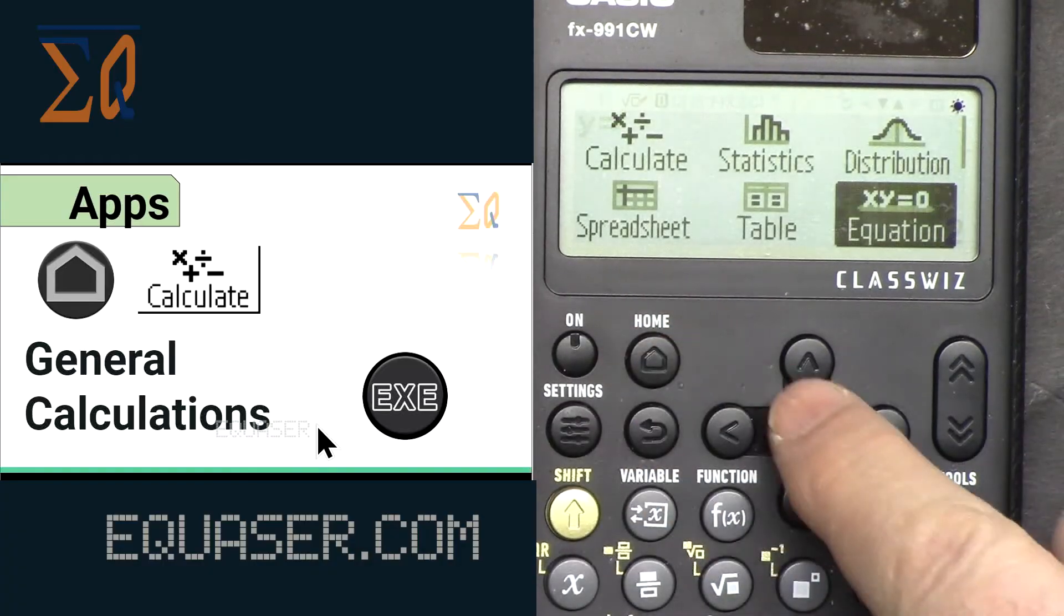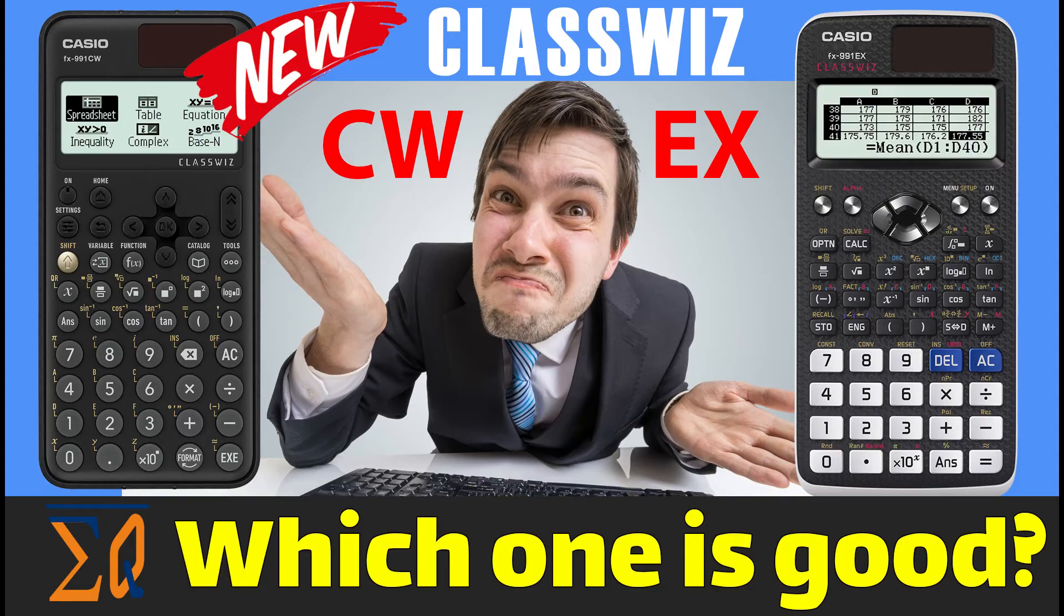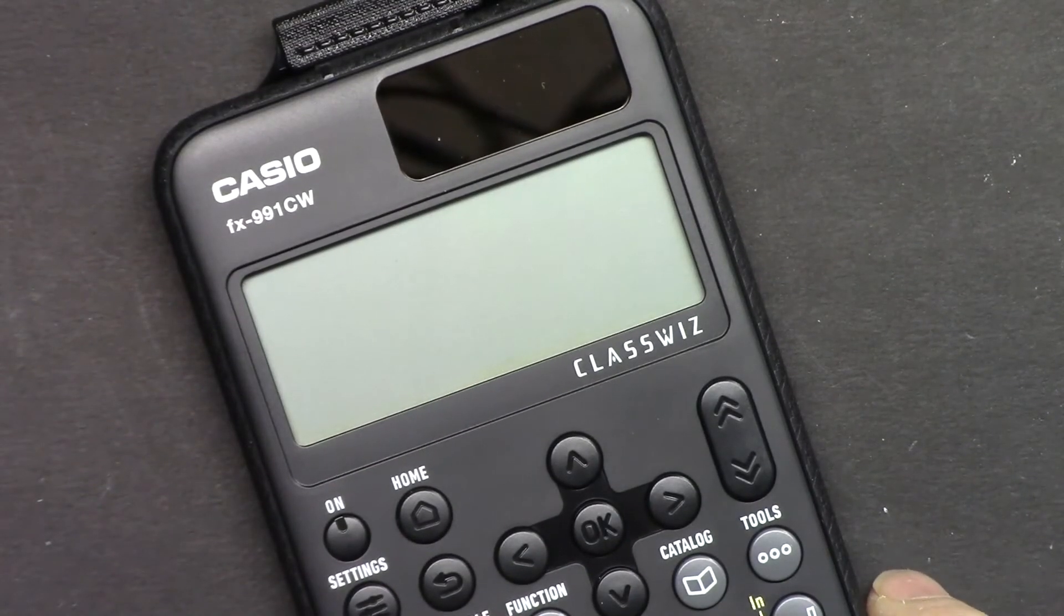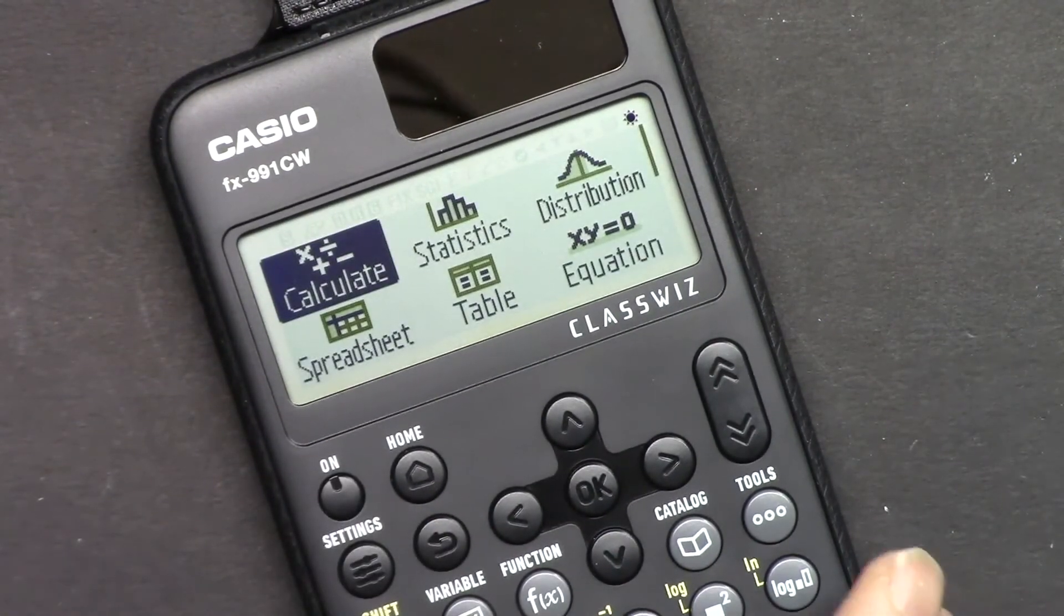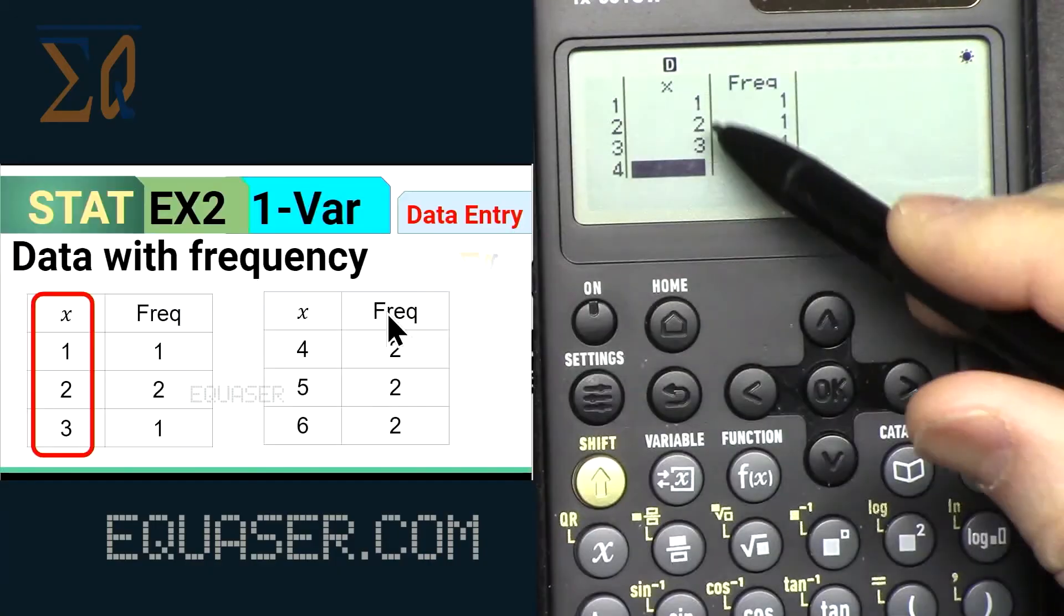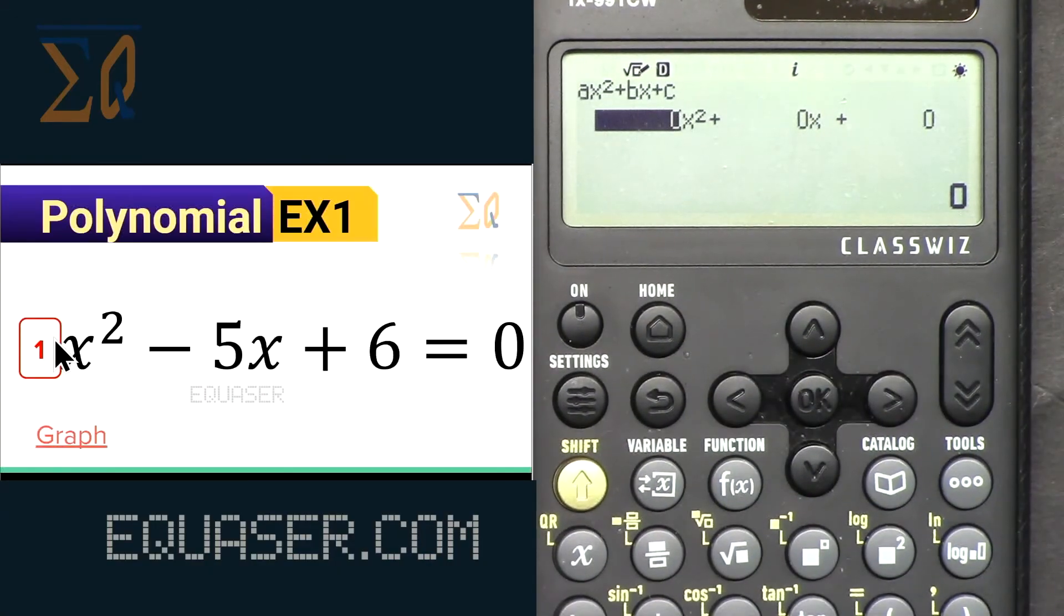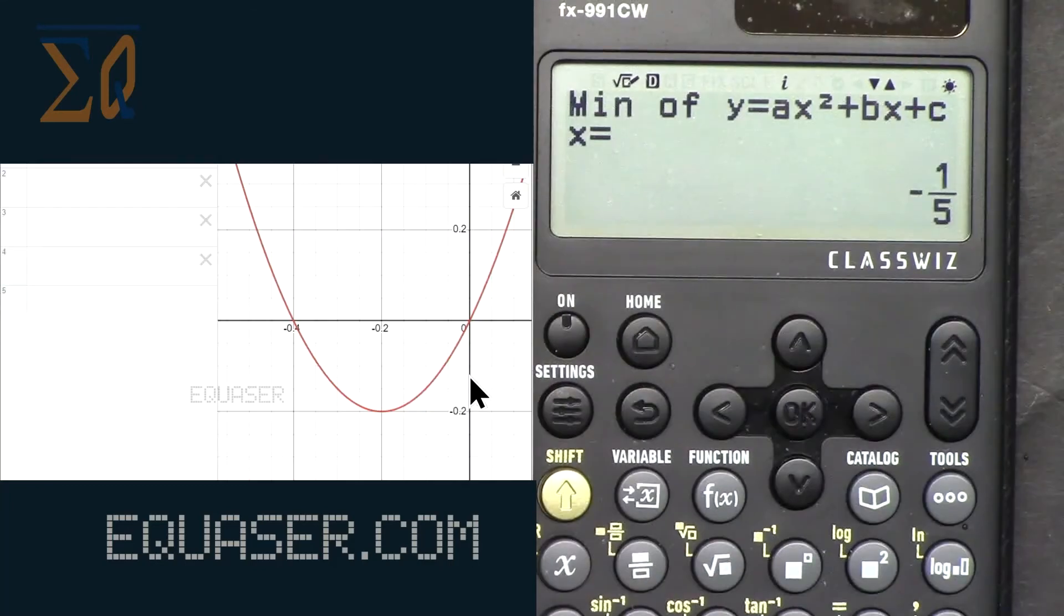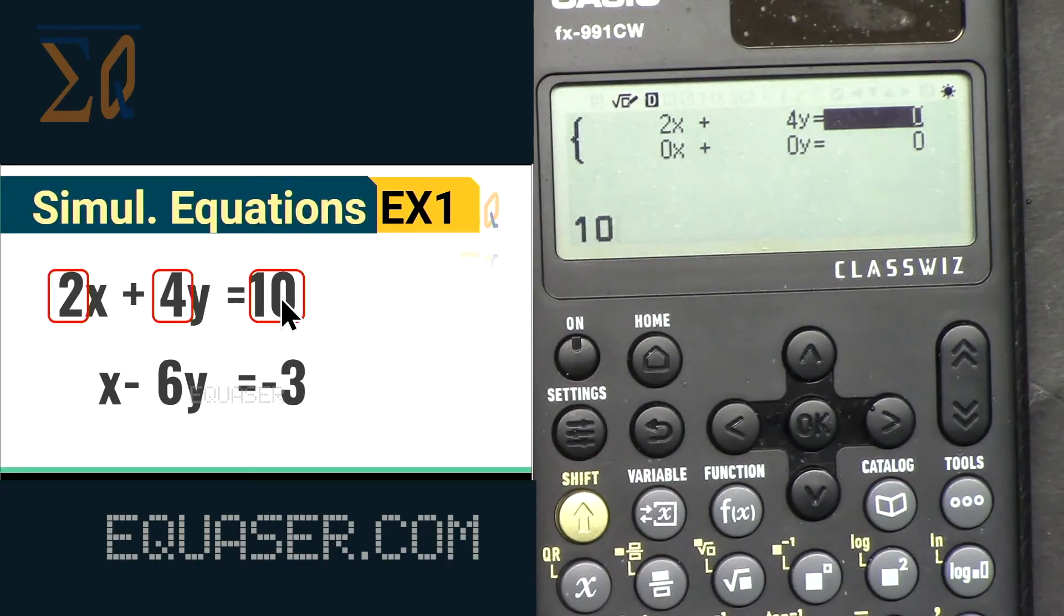Now let's press Home, General Calculation. That's the first time I turned it on. So what can you do with this calculator? With this calculator, you can do all basic calculation, statistical calculation, distribution, polynomials such as quadratic, cubic, and quartic up to degree four calculation, and simultaneous equations.